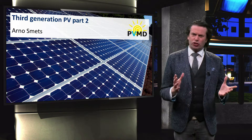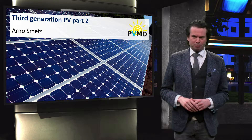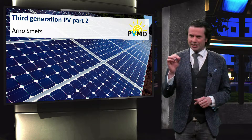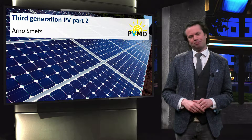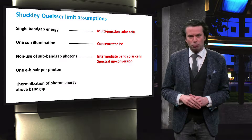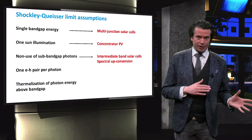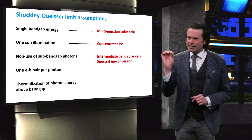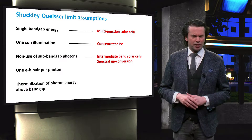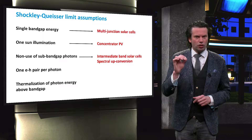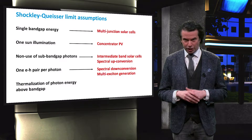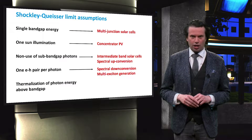In the previous video, we started our discussion of third generation concepts. These concepts are novel approaches that aim to go beyond the Shockley-Queisser limit, by challenging the assumptions upon which this limit is based. We discussed how intermediate band solar cells and spectral upconversion tackle the assumption that sub-band gap photons cannot lead to charge carrier generation. The next assumption of the Shockley-Queisser limit is that photons with an energy much greater than the band gap energy can only excite a single electron-hole pair. Spectral downconversion and multiple exciton generation are two concepts that challenge this assumption.